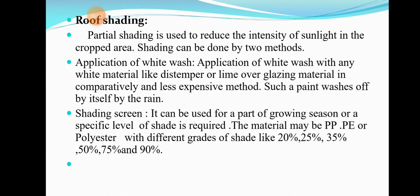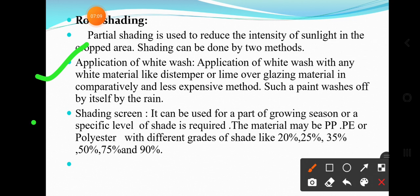Now, roof shading. Think about the application of whitewash. Roof shading is used to reduce the intensity of sunlight in the crop area. White color reflects radiation, which is why temperature is maintained inside the greenhouse in the summer season. Shading can be done by two methods: application of whitewash and shading screen. Whitewash using any white material like distemper or lime is a comparatively less expensive method.